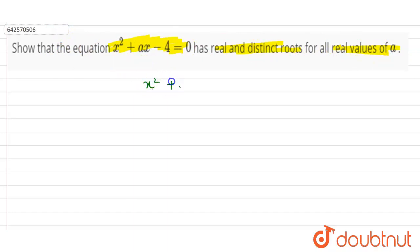So the given equation is x squared plus ax minus 4 equals 0. Now we know that the condition for real and distinct roots, the value of discriminant is greater than 0 which means b squared minus 4ac greater than 0.